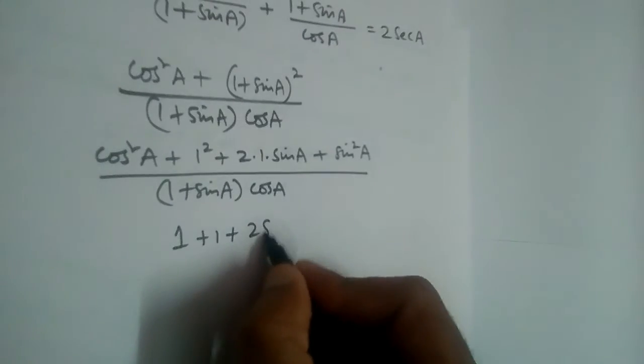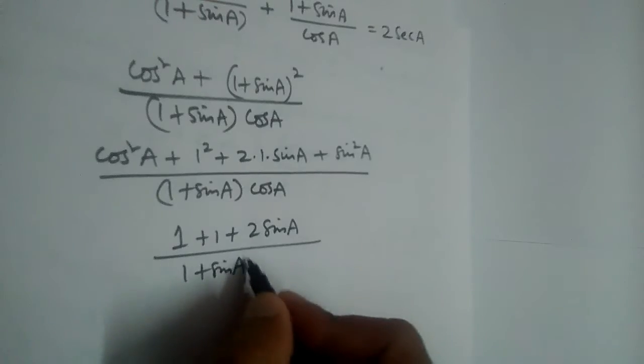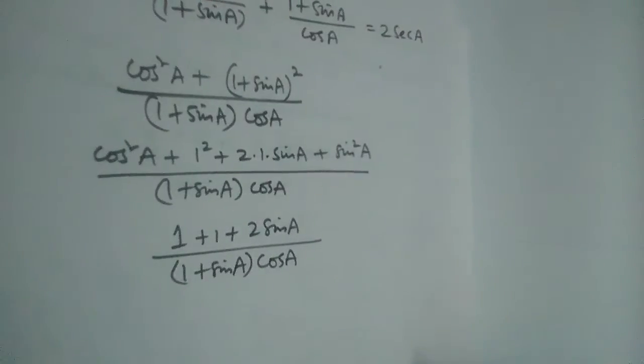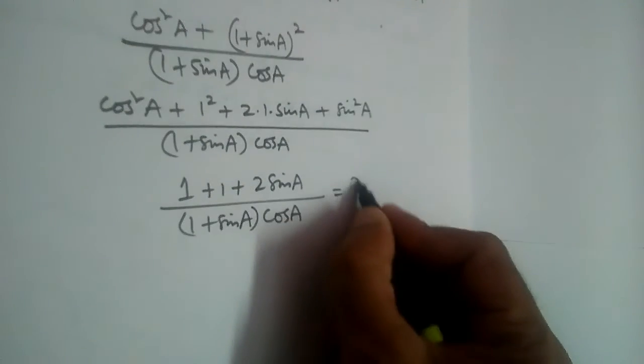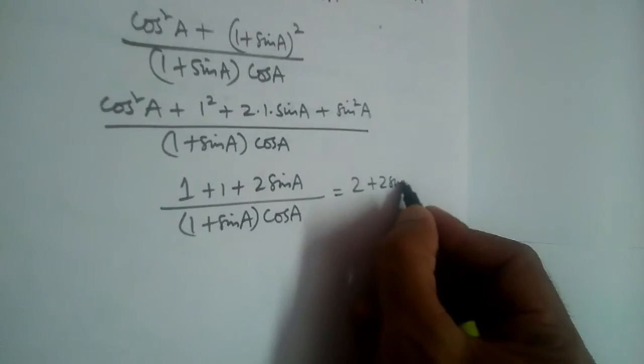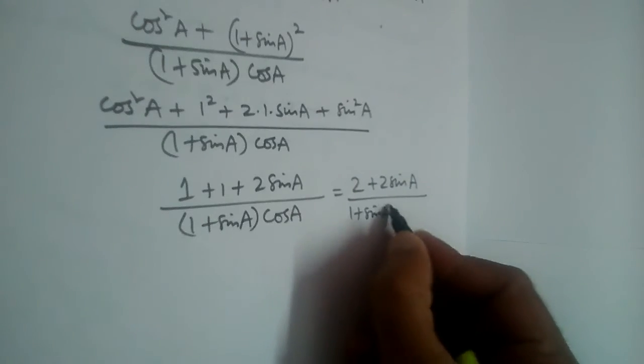Plus 2 into 1 is 2 sine A, divided by 1 plus sine A multiplied by cos A. So 1 plus 1 is 2. This will become 2 plus 2 sine A divided by 1 plus sine A into cos A.